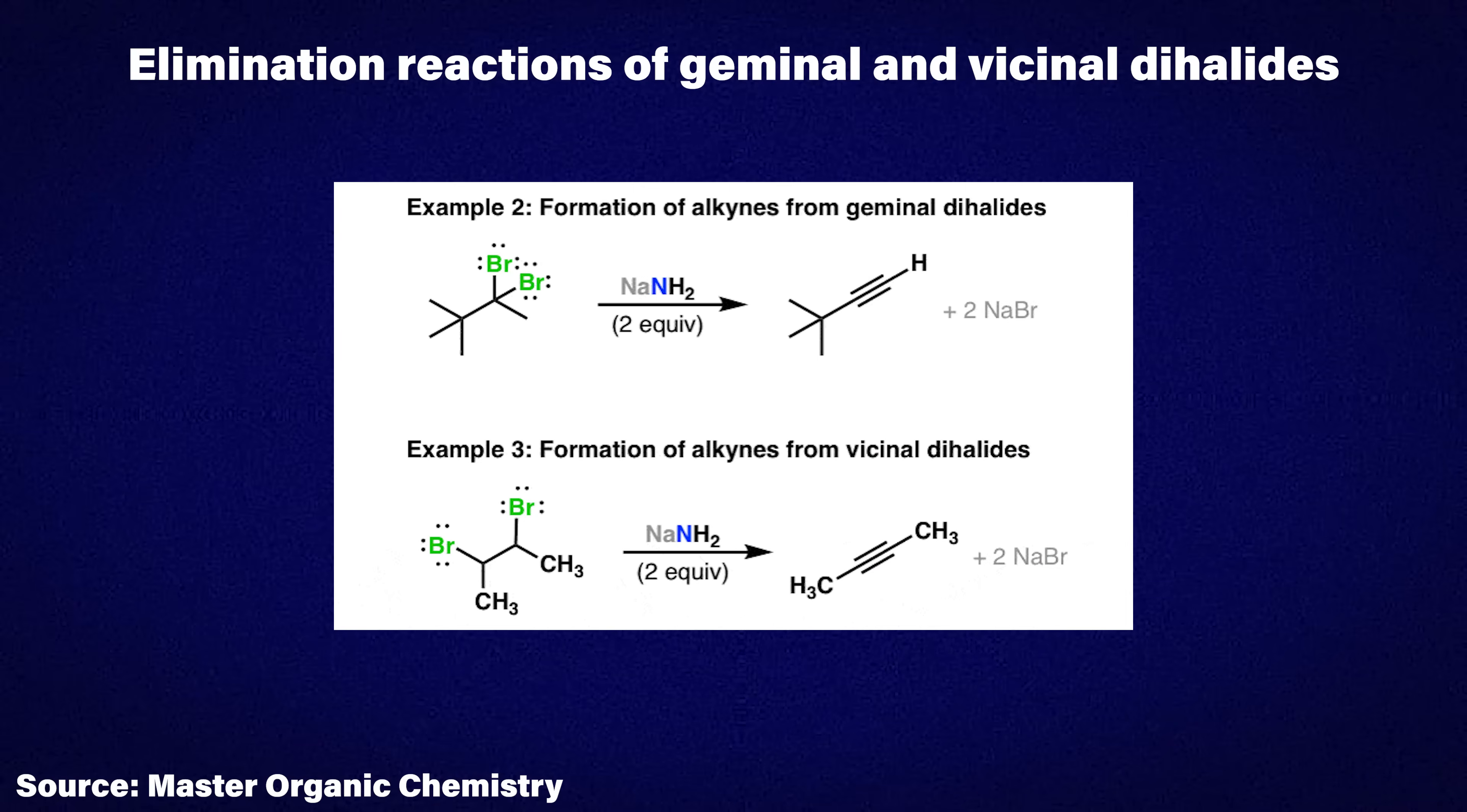Another popular reaction is the elimination reaction of geminal and vicinal dihalides. This yields alkynes, which is also very useful in organic synthesis. Geminal dihalides are essentially both halogens on one carbon and vicinal are halogens on adjacent carbons to each other.